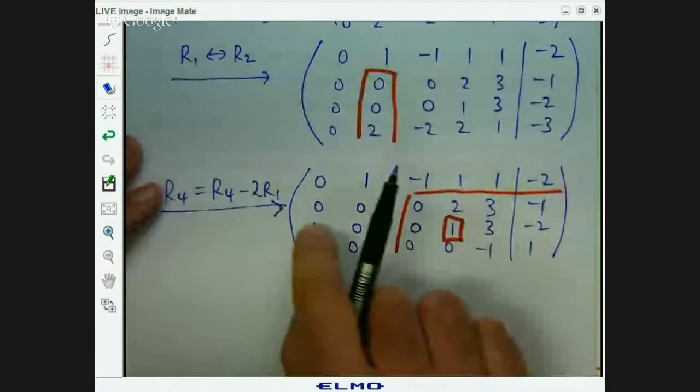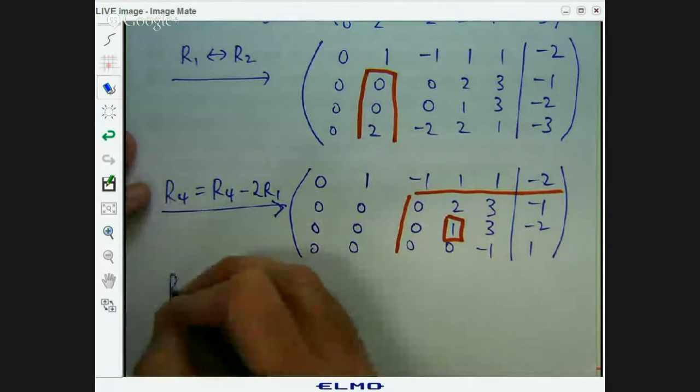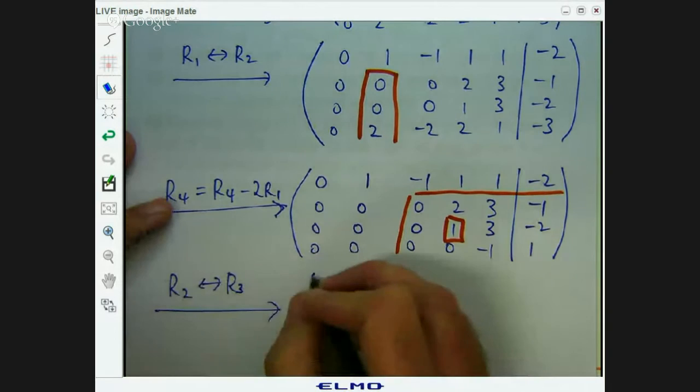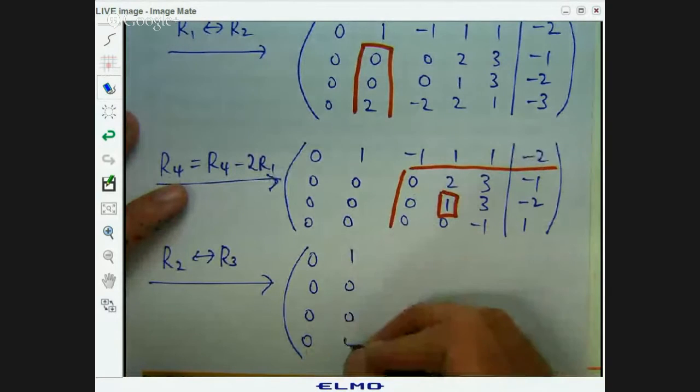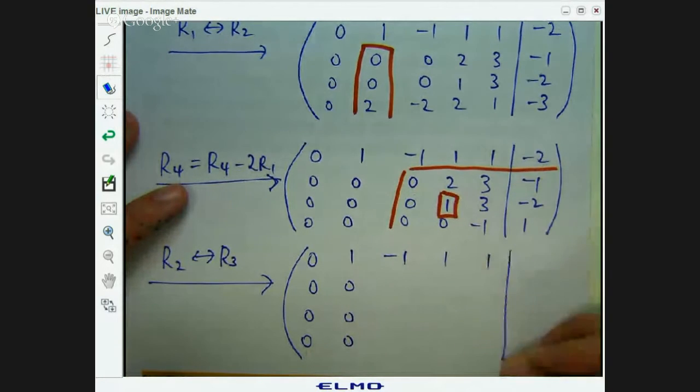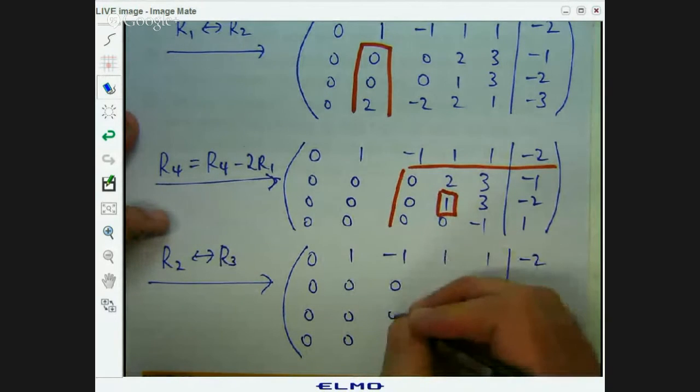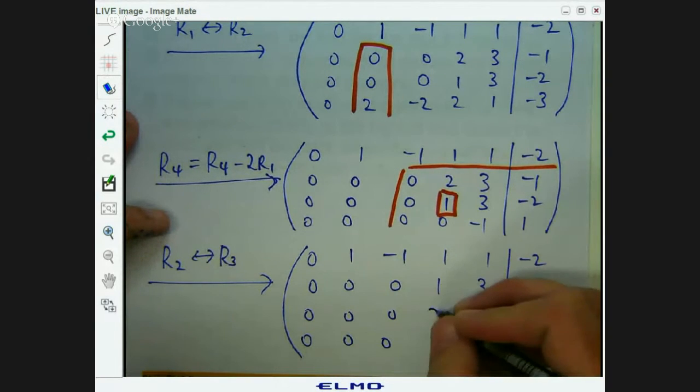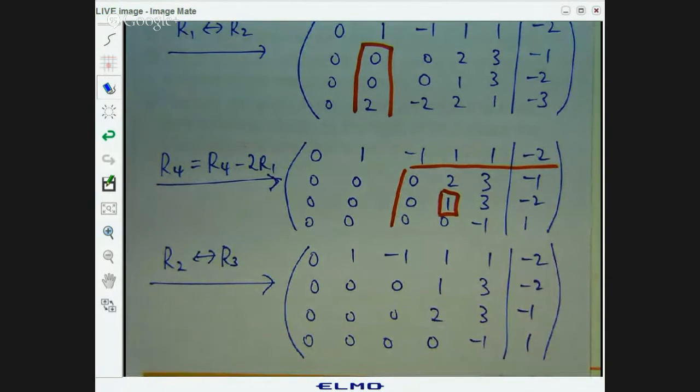So I would swap row three with row two. So I've got all zeros here, so nothing's going to change there. So that's going to go, so there's more zeros there. That's not going to change. So that's going to go up there. One, three, negative two, two, three, negative one, zero, negative one, one.